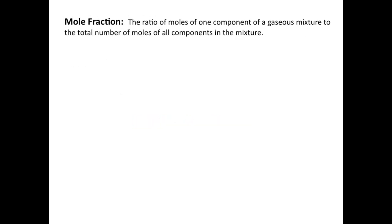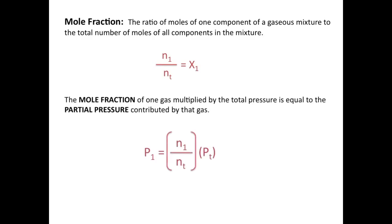The mole fraction is the ratio of moles of one component of a gaseous mixture to the total number of moles of all components in the mixture. To find the mole fraction of one gas, we take the number of moles of that gas, N sub 1, and divide by the total number of moles, N sub T. Combining these ideas, the mole fraction of one gas multiplied by the total pressure equals the partial pressure of that gas. Remember that the mole fraction is a ratio of moles and not grams.